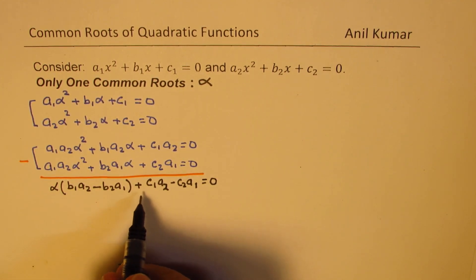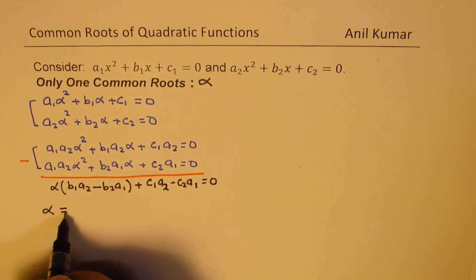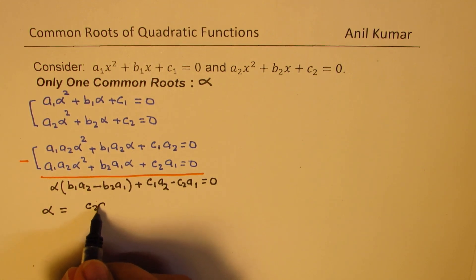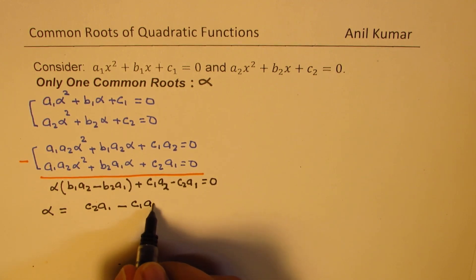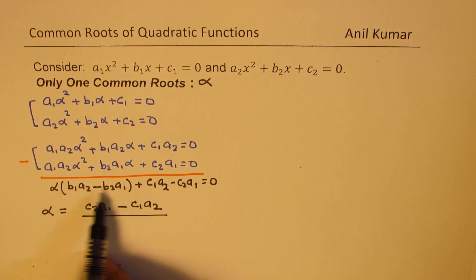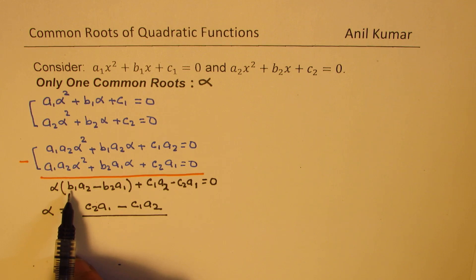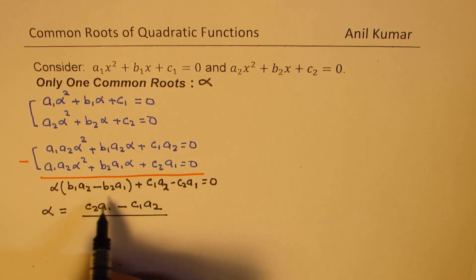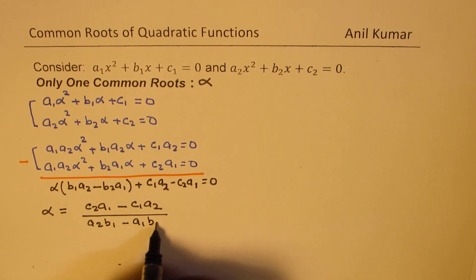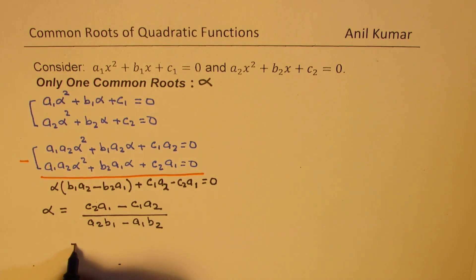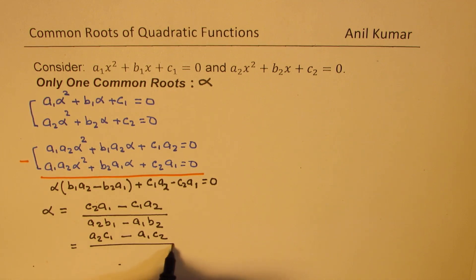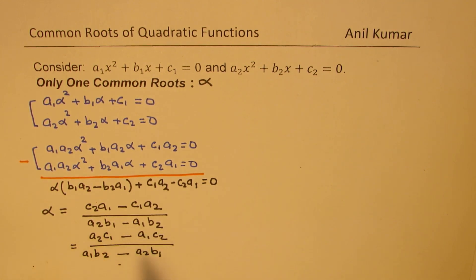From this, we can isolate alpha. Taking the constant term to the other side, we get alpha equals (c2a1 - c1a2) divided by (a2b1 - a1b2). Equivalently, this can also be written as (a2c1 - a1c2) over (a1b2 - a2b1).